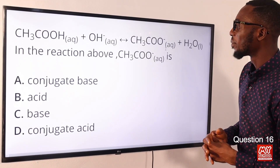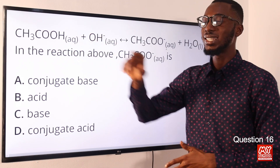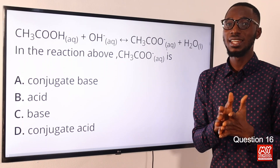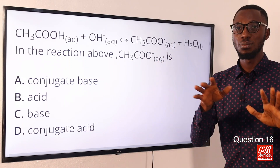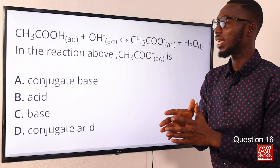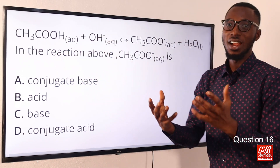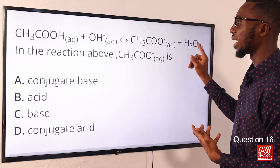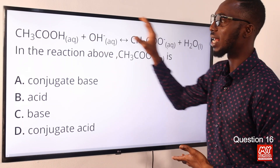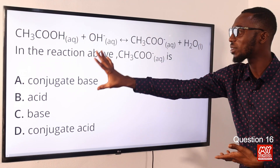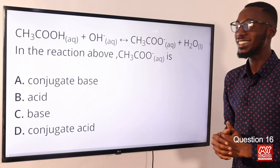Question 16: In the reaction above, the acetate ion is what — it is a conjugate base to acetic acid. Using the Bronsted-Lowry proton theory: once an acid loses a proton, it forms a conjugate base. The conjugate base to acetic acid is the acetate ion. And when the base (hydroxide ion) receives a proton, it forms a conjugate acid — water. So in the reaction, acetate ion is a conjugate base to acetic acid. Option A is the correct answer.